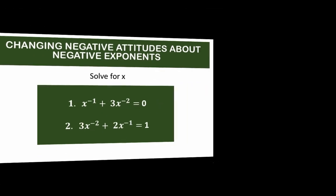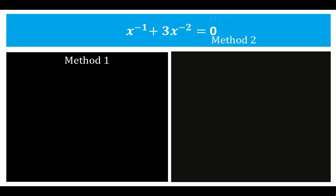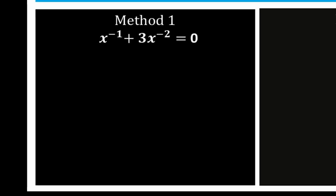Let's start with the first problem. I am going to show you two ways of solving this problem — let's call them method number 1 and method number 2. For the first method, let's begin with the given equation. Then we look for the common factor between x raised to negative 1 and 3x raised to negative 2.